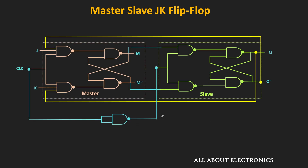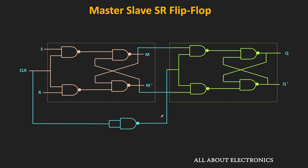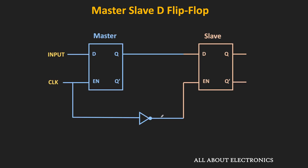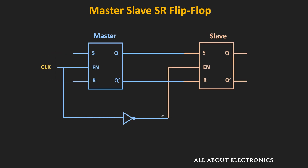Similarly, we can design the master-slave SR flip flop and the master-slave D flip flop. For the master-slave SR flip flop, two gated SR latches are used with the inverted clock applied to the slave latch. Likewise, using two gated D latches, we can design the master-slave D flip flop.